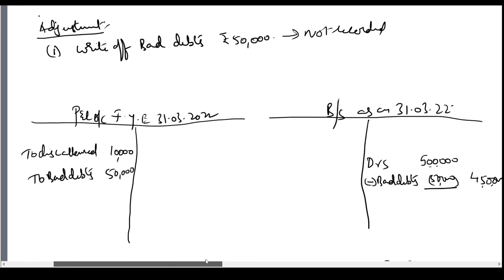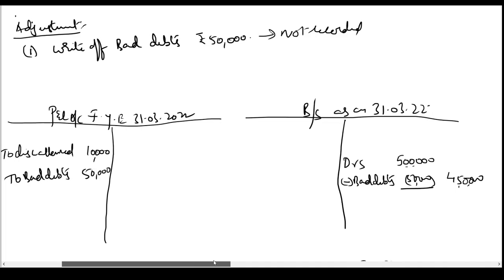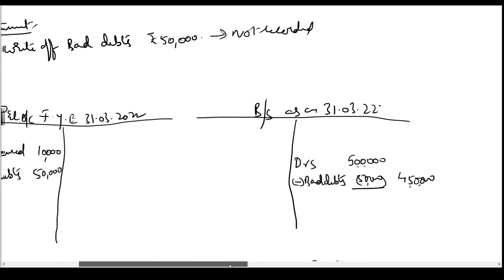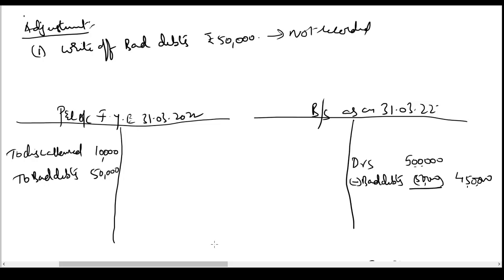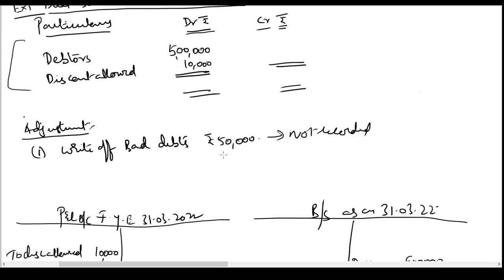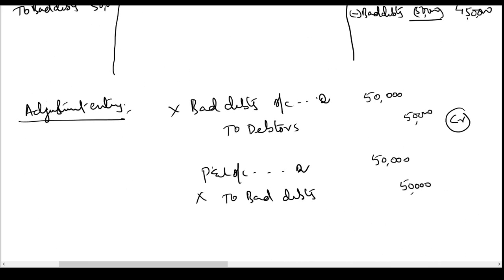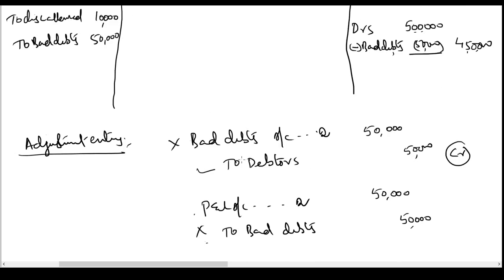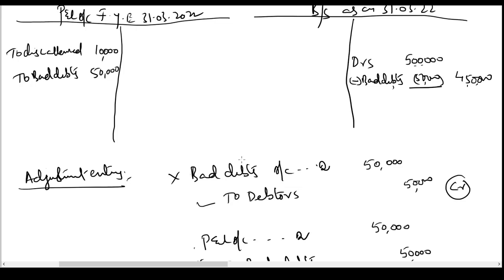This is how we deal with bad debts when it is given outside the trial balance. We pass these adjustment entries: bad debts account debit, to debtors account. Because of this entry, debtors account is credited, which is why we reduce it from the balance sheet. Bad debts account is a loss — it is closed by transferring to the P&L account, hence P&L account is debited and bad debts account is credited. Bad debts is shown in the P&L account as a loss and reduced from debtors in the balance sheet.